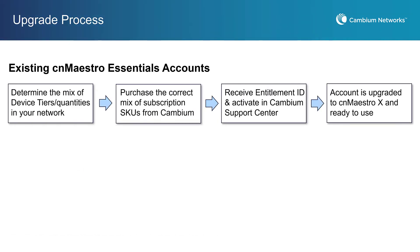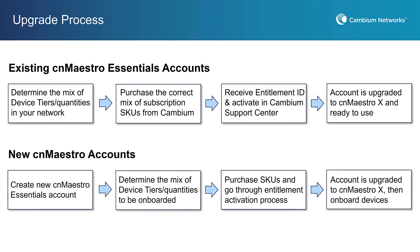If you already have a CNMeisterOx Essentials account managing your network, all you need to do is purchase the required quantity and device tier mix of subscriptions, then go through the activation process. Cambium delivers your subscription order via email in the form of an entitlement. You activate the entitlement ID in Cambium's Support Center portal and your account is upgraded. If you don't have a CNMeisterOx Essentials account, you can create a new account and upgrade it during the entitlement activation process, then onboard your devices.